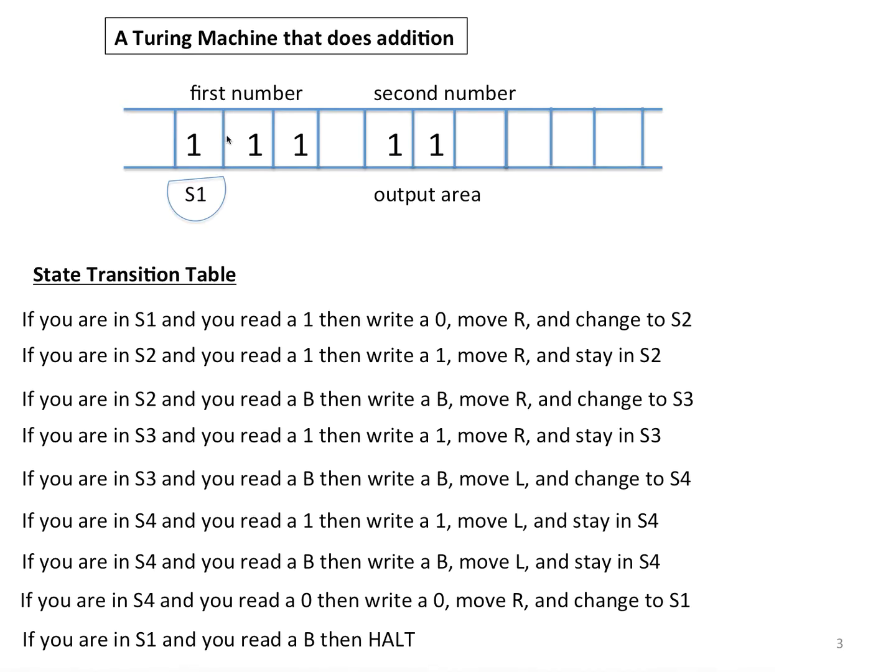And here is the Turing machine's tape. The Turing machine's symbols are 1, 0, and blank. The first number that gets added is listed here, and the code we are using is the quantity of 1s represents the number, so this is 3.